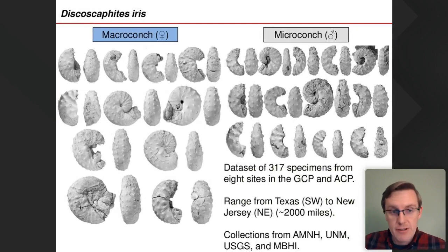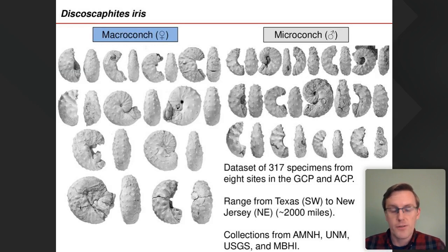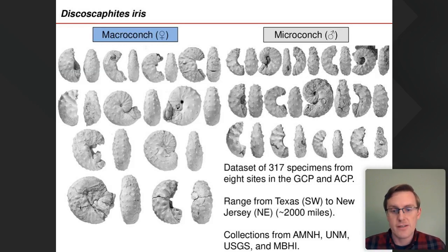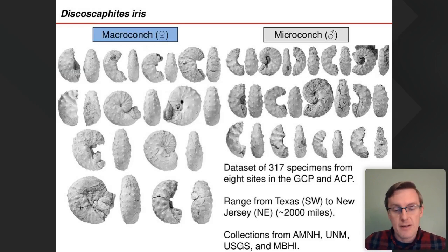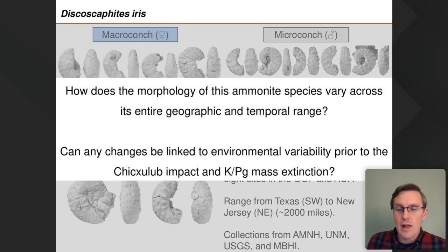The taxon of interest is *Discoscaphites iris*, a scaphitid ammonite — one of the so-called heteromorph ammonites. It comes in two dimorphs: the larger macroconchs and the smaller microconchs, probably sexual dimorphs corresponding to females and males. We assembled a dataset of over 300 well-preserved specimens from eight sites across the Gulf and Atlantic coastal plains from Texas up to New Jersey, a distance of about 2,000 miles — a great opportunity to examine morphological variation across its entire geographic and temporal range.